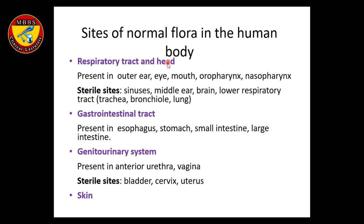Sites of normal flora include the respiratory tract and head. The sterile sites of the respiratory tract — which contain no flora — are the sinuses, middle ear, brain, and lower respiratory tract. In the gastrointestinal tract, normal flora is present. In the genitourinary system, the sterile sites are the bladder, cervix, and uterus.